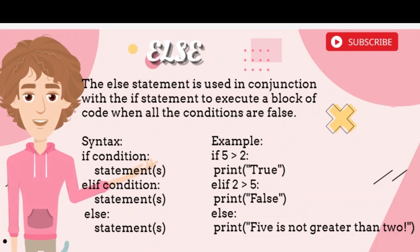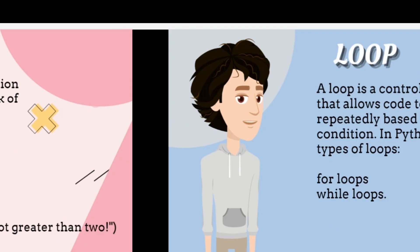Syntax: if condition: statement(s) elif condition: statement(s) else: statement(s). Example: if 5 > 2: print("True"). elif 2 > 5: print("False"). else: print("Five is not greater than two").